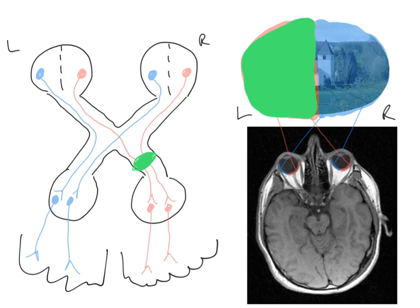One important point: what does the word 'homonymous' mean? Homonymous means affecting both eyes equally. In this case, assessing the right eye alone shows it has lost the left visual field, and assessing the left eye alone also shows it has lost the left visual field. So homonymous effectively means both eyes are affected equally.